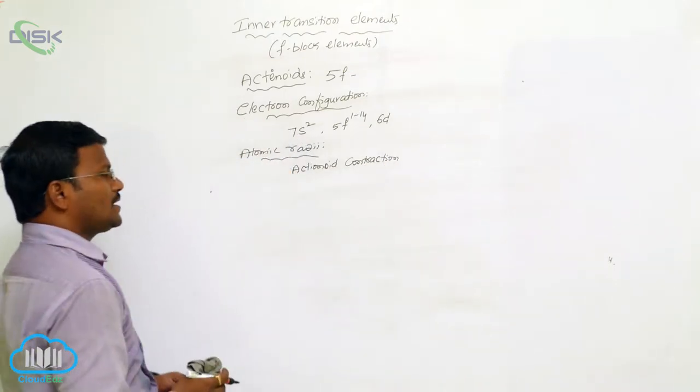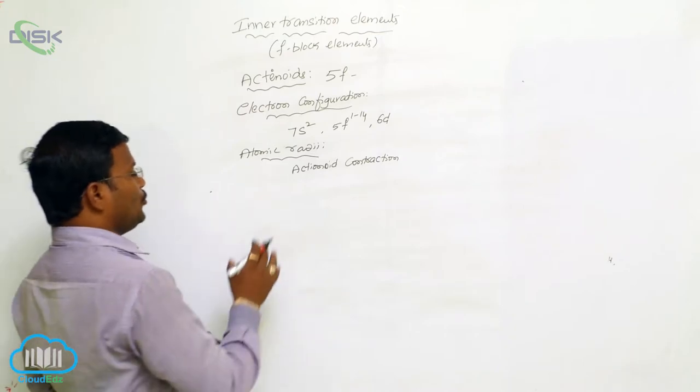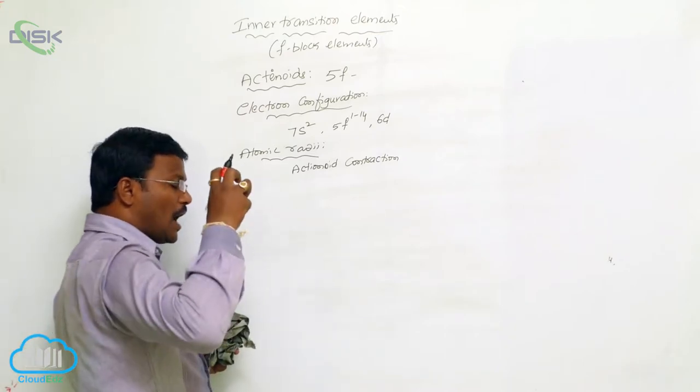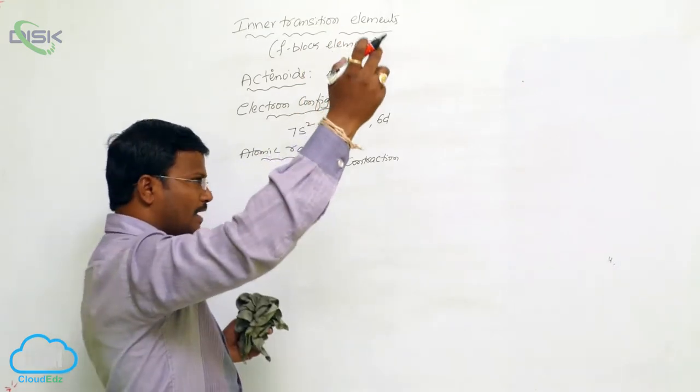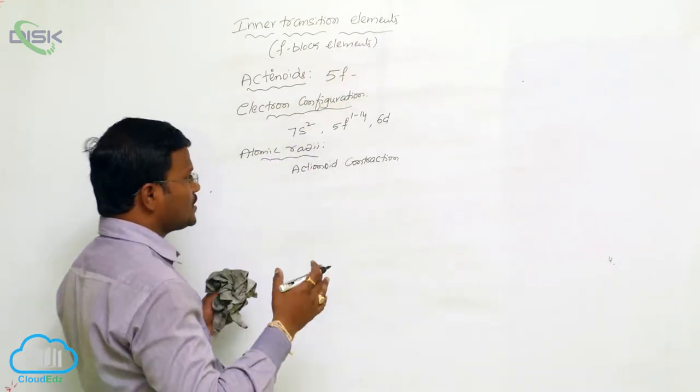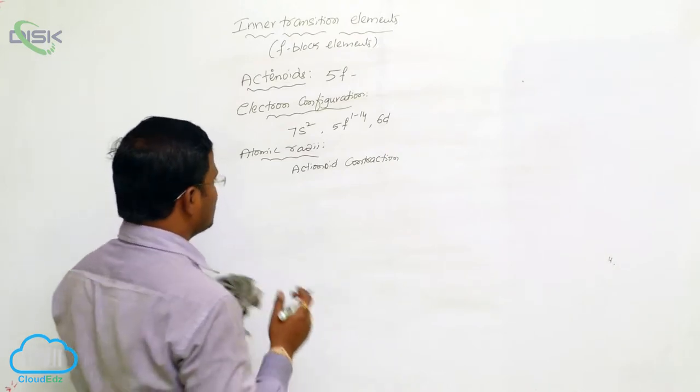One more is actinide contraction. Due to actinide contraction, the positive character of the nucleus increases and the outermost orbit can attract electrons strongly, hence resulting in less atomic size.